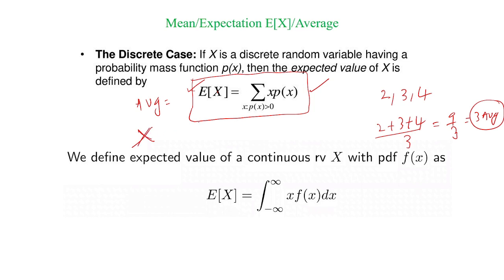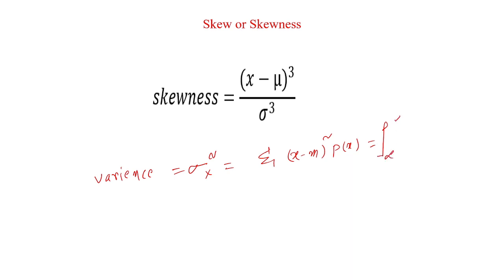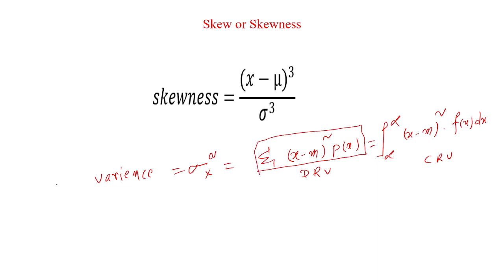The second mean is defined as variance. Variance is denoted with sigma x squared. For a discrete random variable, it is defined as the sum of (x minus m) whole squared into p of x. For a continuous random variable, that is the integral from minus infinity to plus infinity of (x minus m) whole squared into f of x dx. This is for continuous random variable and this is for discrete random variable. This is the second mean, sometimes denoted with m2, that is variance of x.